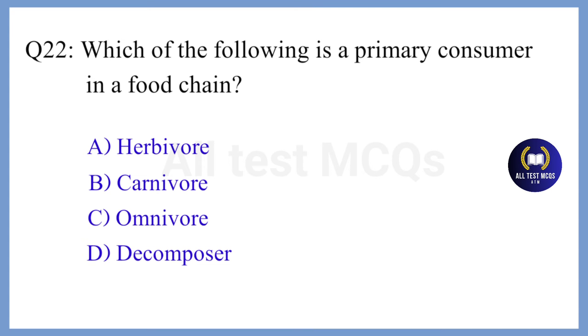Question 22. Which of the following is a primary consumer in a food chain? The correct answer is Option A. Herbivore.